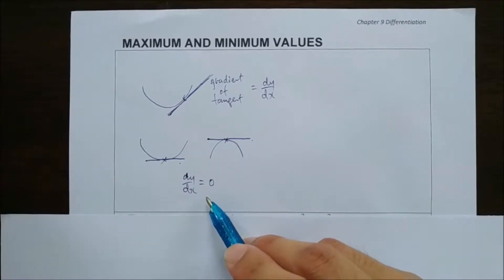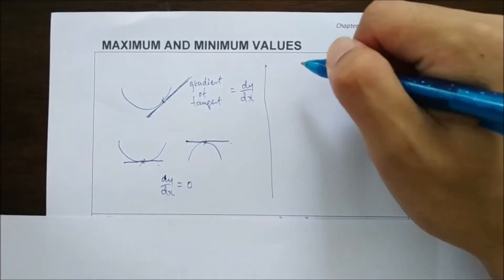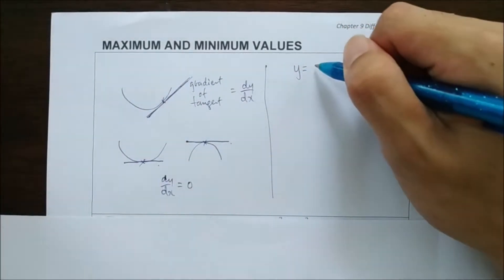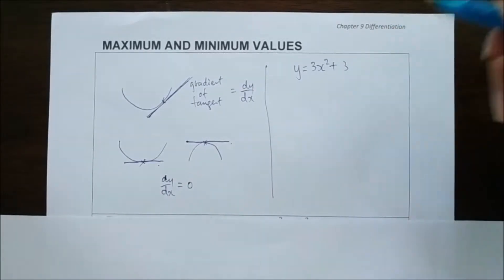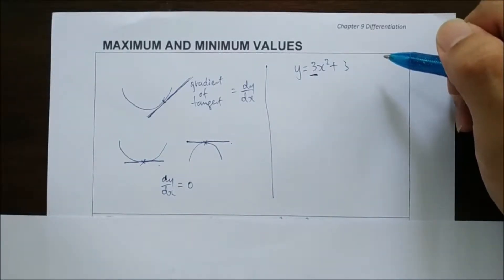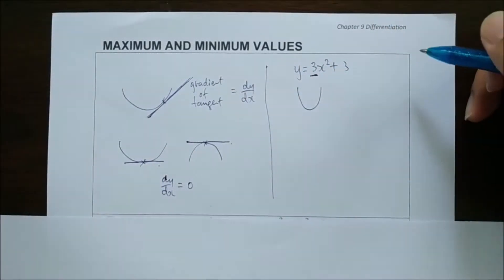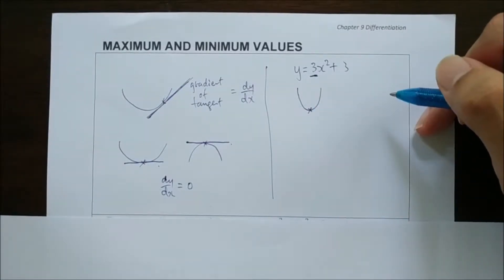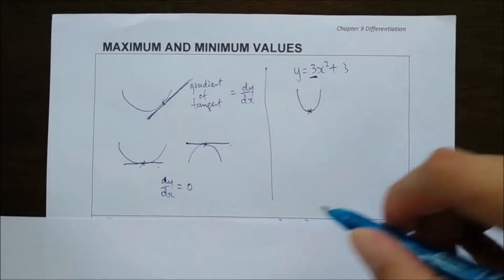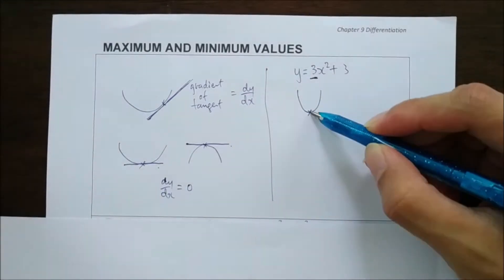This is important to help us determine the minimum or maximum value or point. You might recall that given a quadratic equation, like for example 3x² + 3, by looking at the coefficient of x², if it is positive, we know the shape of the graph will be a smiley face, so we know the point will be a minimum point. We don't have to use dy/dx to determine whether it is maximum or minimum — we only need it to find the coordinates, the values of x and y.